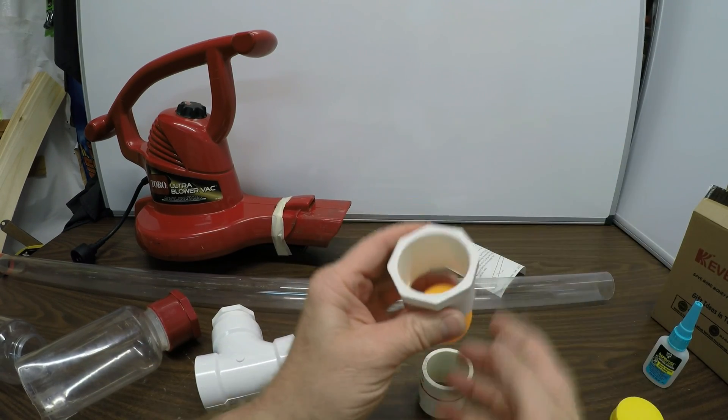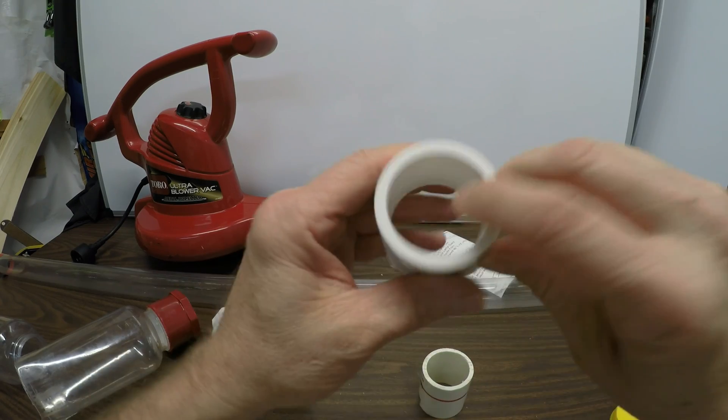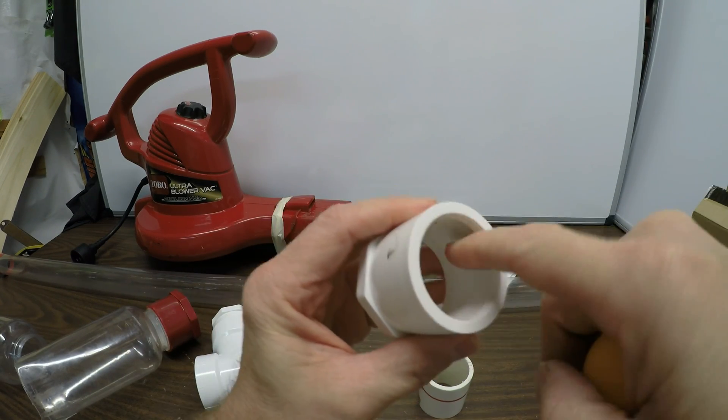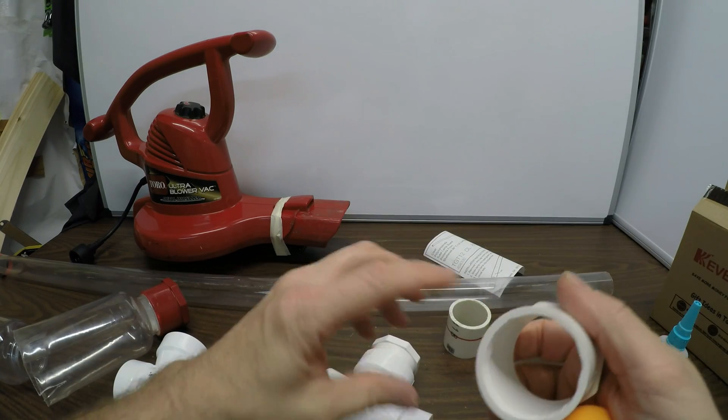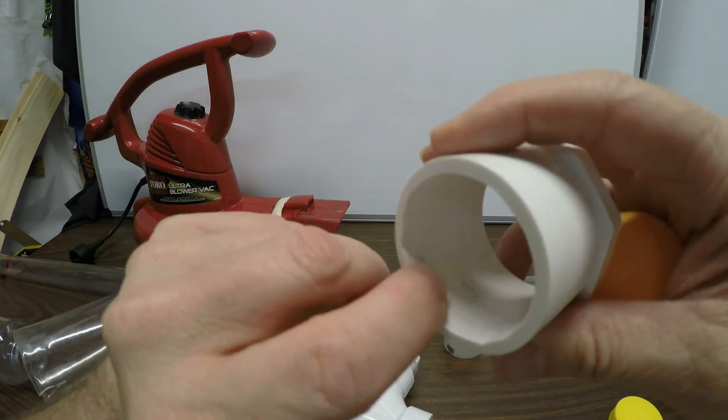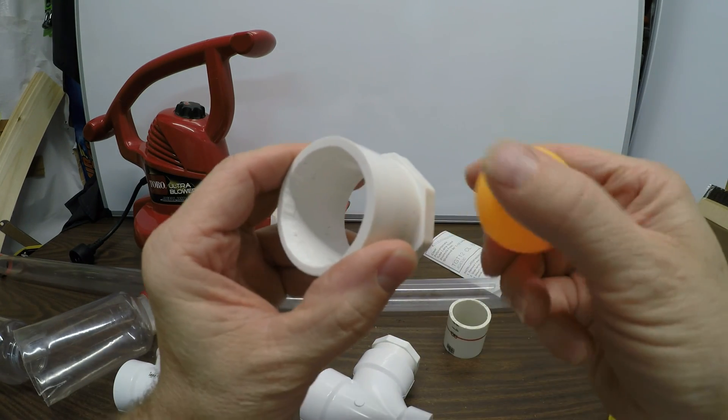So you actually have to grind down this little ledge. This little lip here. You can see here. I just use the Dremel tool. Now you can see a little bit of marks from the labels of the balls.